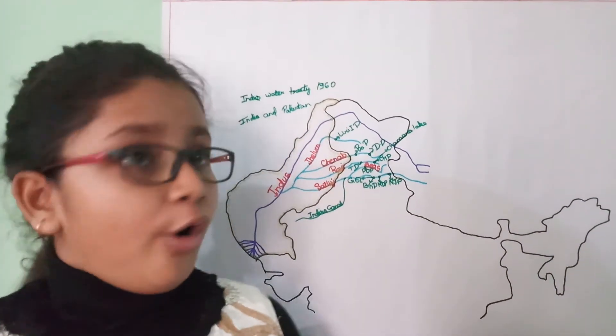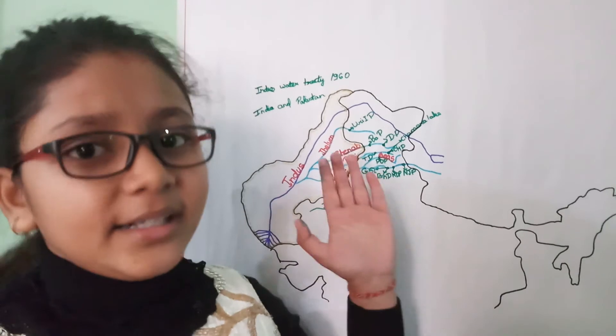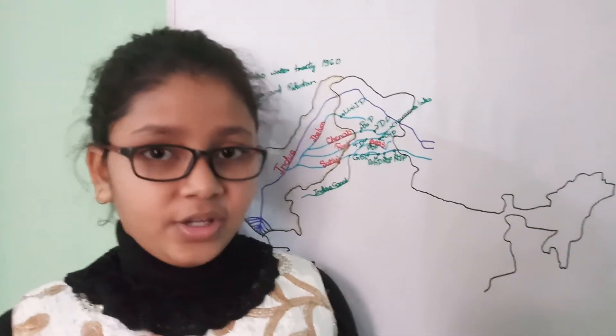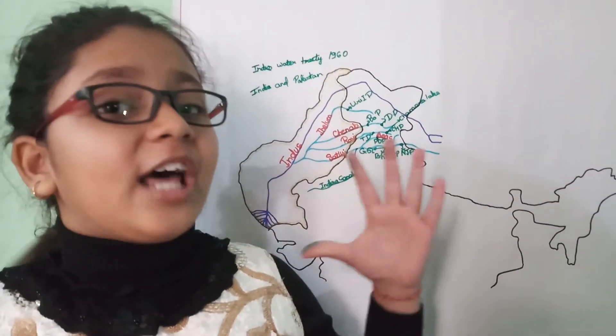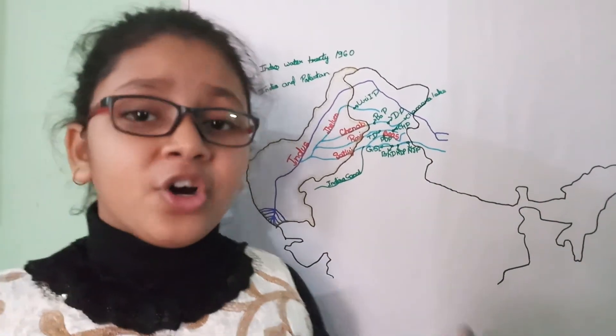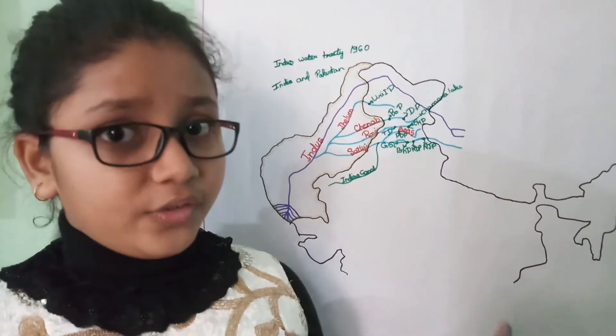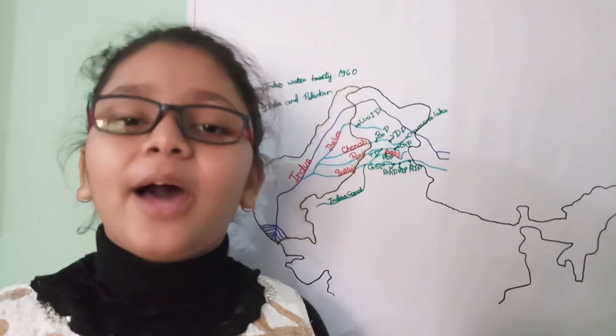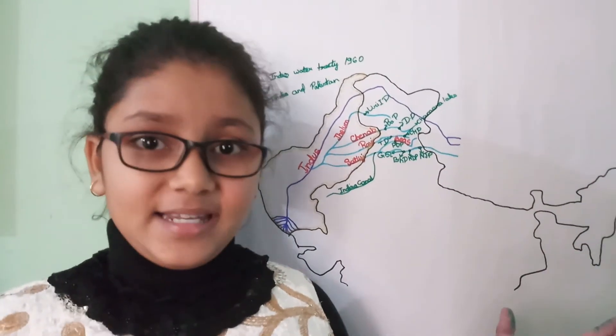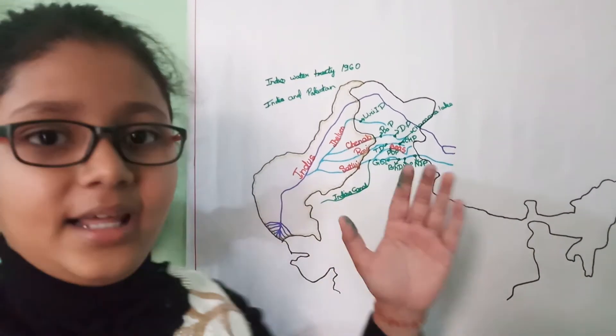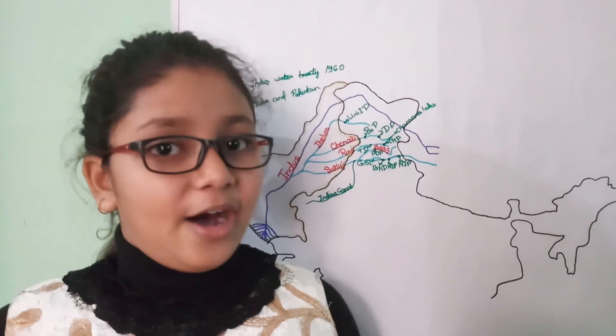One of the important projects of this is the Indira Gandhi Canal. It totally transformed the life of the desert region, as it covers an area of 600 km long and 45 km wide of the Thar Desert.